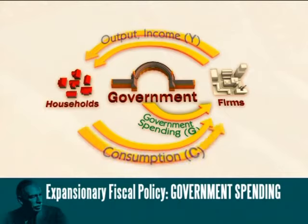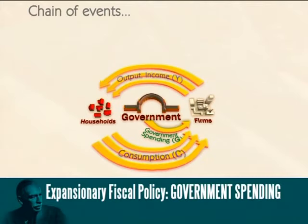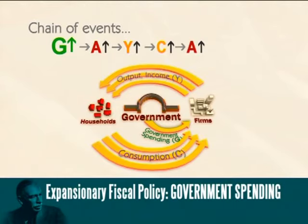The multiplier kicks in, and production is boosted even further, and income rises again. That initial injection of government spending stimulates a cycle of rising output and income. An increase in government spending increases total spending, which boosts output and income. The multiplier adds momentum, and the rise in output and income causes a rise in consumption spending, so total spending increases again, stimulating even more production and income.